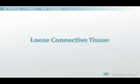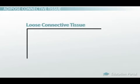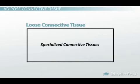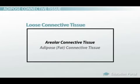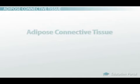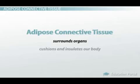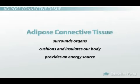Although it is a bit confusing, loose connective tissue can be considered a parent category of specialized connective tissues. In this case, instead of being labeled as loose connective tissue, areolar connective tissue would fall under this category, along with adipose or fat connective tissue. We find adipose connective tissue everywhere. It surrounds organs, cushions and insulates our body, and provides an energy source.